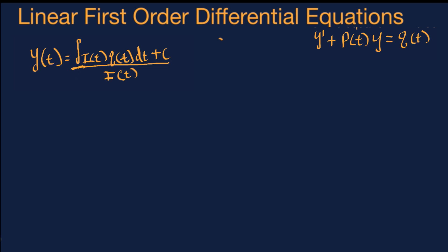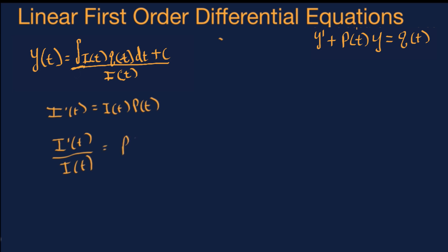We have yet to figure out what the integrating factor i(t) is. All we know so far is that when you take its derivative, it equals the function itself times p(t), which was the coefficient of our equation in its initial form. So let's get i(t) and its derivative on the same side by dividing both sides by i(t), giving us the derivative of i(t) over i(t), which equals p(t).